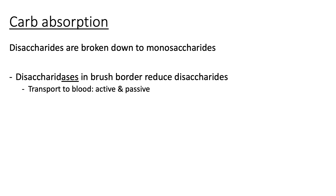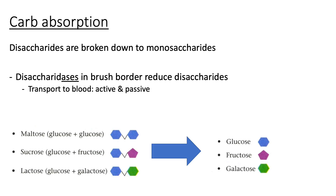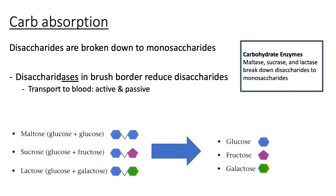The resulting disaccharides from carbohydrate digestion within the intestinal lumen will be further broken down into monosaccharides via disaccharidases — enzymes found within the brush border. Maltose, which is glucose and glucose, is broken down into two individual glucose molecules. Sucrose is broken down into glucose and fructose. Lactose is broken down into glucose and galactose. Each has its own specific disaccharidase: maltase, sucrase, and lactase.